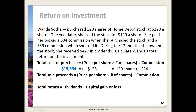Next we have to calculate the total sale proceeds that occur a year later. In this formula you'll take the price per share a year later, multiply it by the 120 shares — because she's selling all of it — and subtract the commission. So we'll take $140, multiply it by 120, and then subtract the $39 commission. We get $16,761.